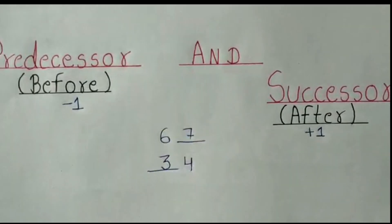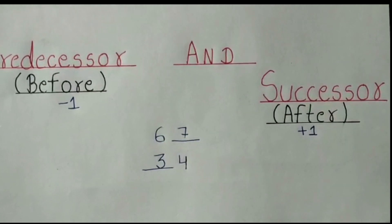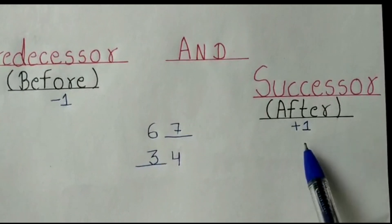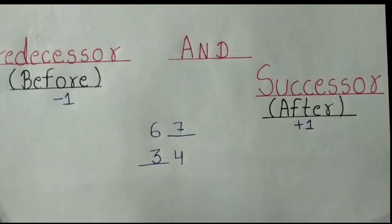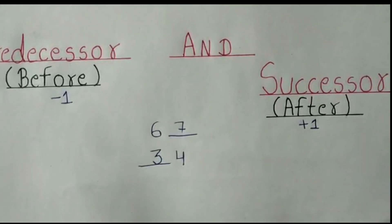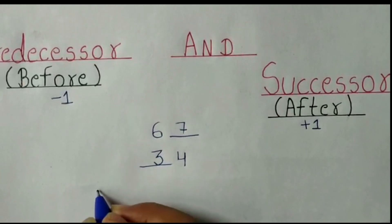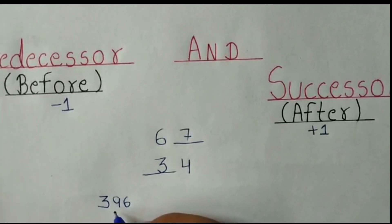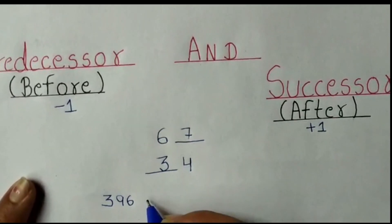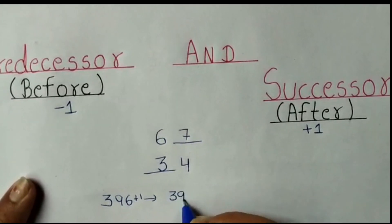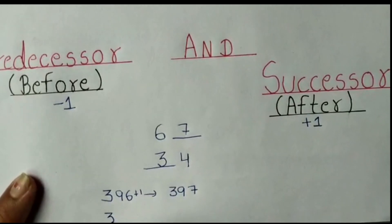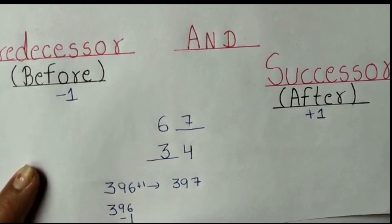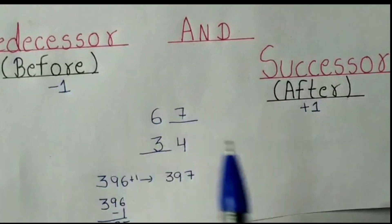How to remember it: successor means to move forward, so we do plus 1. Predecessor means 'previous' or 'before,' so we do minus 1. For example, take 396. The successor of 396 is 396 + 1 = 397, and the predecessor of 396 is 396 − 1 = 395. This is all about predecessor and successor.